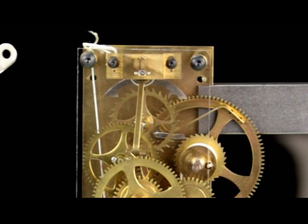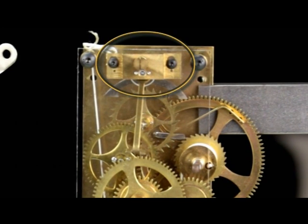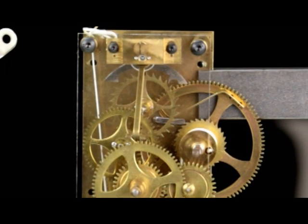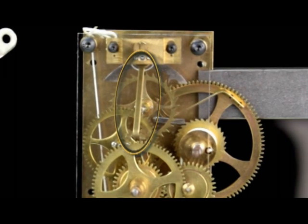The anchor is mounted to an arbor above the escape wheel. There is a bridge instead of a cock to hold one end of the anchor's arbor so the crutch can extend beyond the front or rear plate where it can engage the pendulum rod.